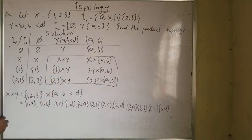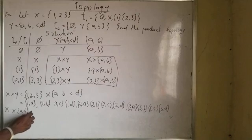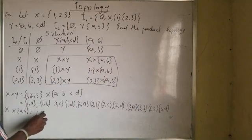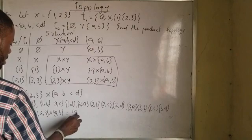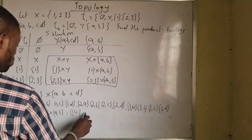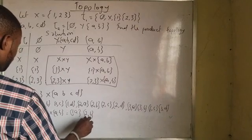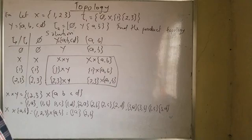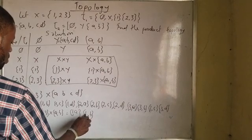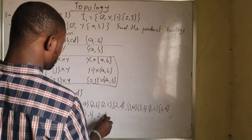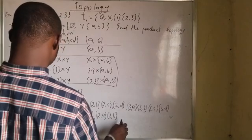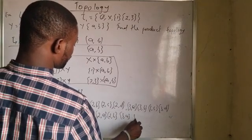Now I move on to the next one: X × {a, b}, which means {1, 2, 3} × {a, b}. I'll be having: 1a, 1b, and also 2a, 2b, and also 3a, 3b.